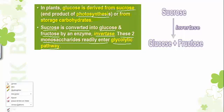Sucrose is a disaccharide — when two monosaccharide units are joined by a glycosidic bond, the resultant carbohydrate is called a disaccharide. Sucrose, the product of photosynthesis, is broken down with the help of the enzyme invertase into one molecule of glucose and one molecule of fructose.